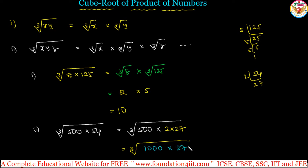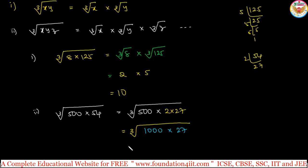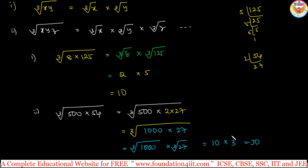So we have cube root of 1000 into 27. Since 1000 is a perfect cube and 27 is also a perfect cube, we can split: cube root of 1000 multiplied by cube root of 27. Cube root of 1000 is 10, cube root of 27 is 3, so the answer is 30. Rather than multiplying 500 into 54 and doing prime factorization, we split into parts.